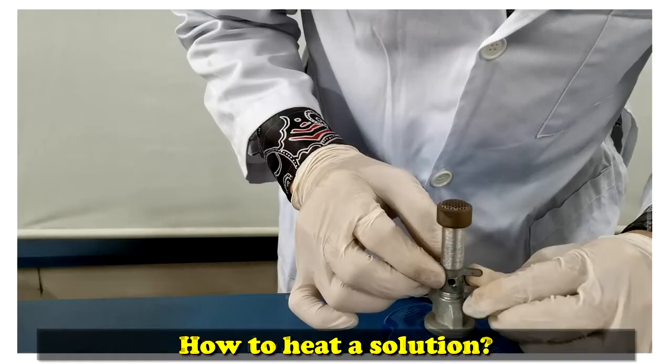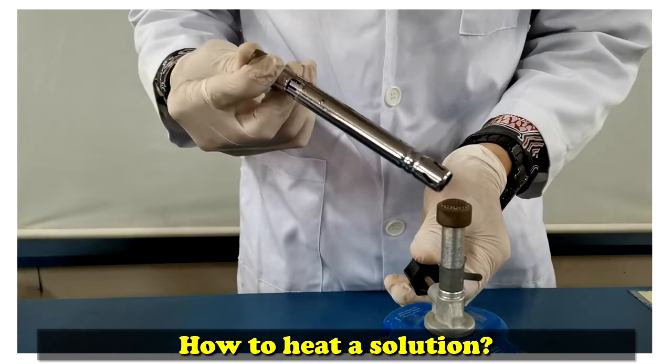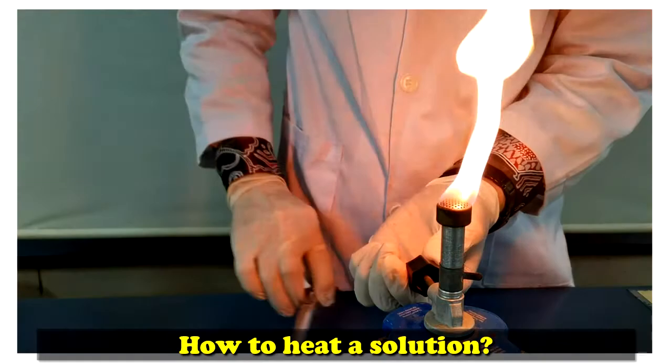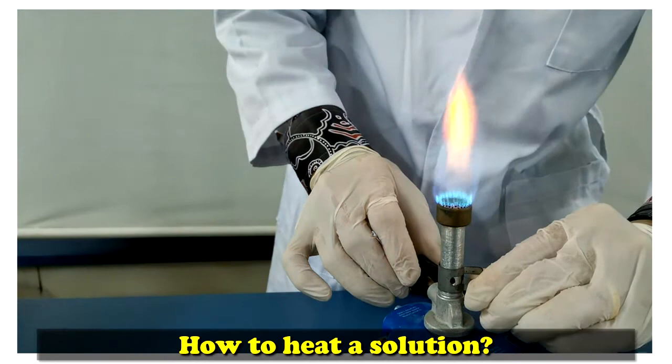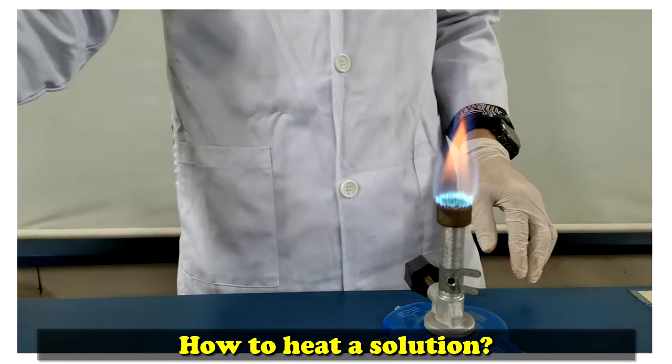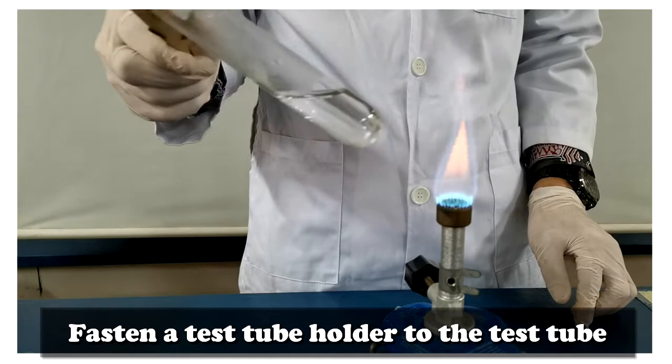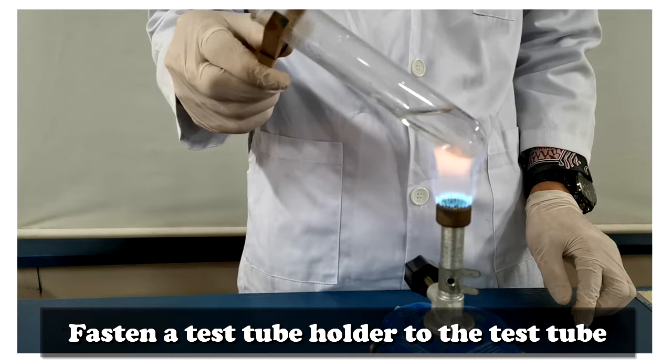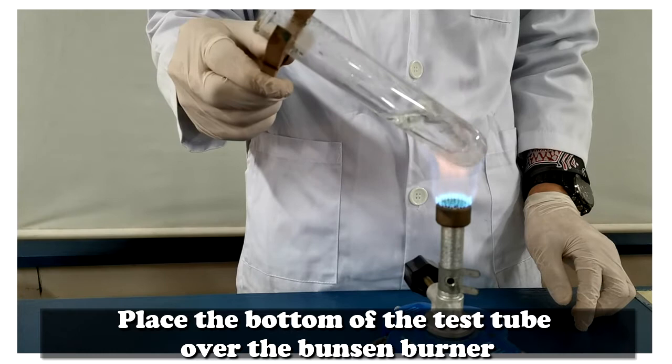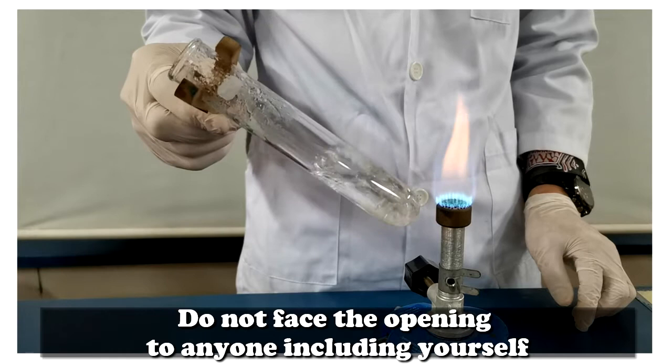How to heat a solution? Fasten a test tube holder to the test tube. Place the bottom of the test tube over the Bunsen burner. Do not face the opening to anyone including yourself.